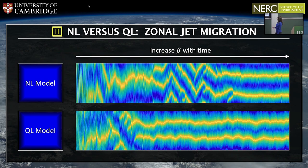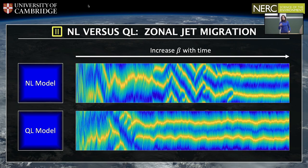Audience member: Is there any parametric trend in the coherence of the migration — how long it goes in one direction before reversing? Laura: That depends on zonostrophy. With higher zonostrophy, jets tend to keep going in the same direction much longer. The probability of changing direction is inversely proportional to zonostrophy.